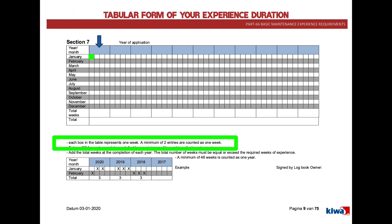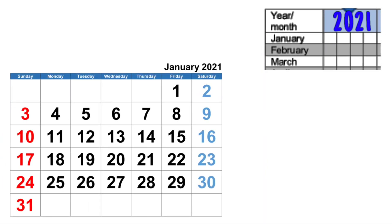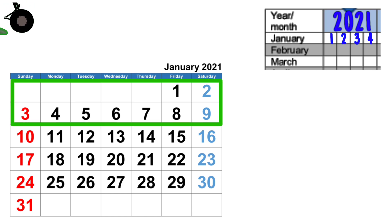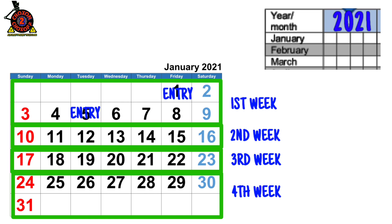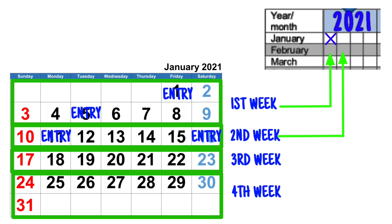Each box in the table represents one week, and a minimum of two entries are counted as one week. For example, take January 2021 — not all months have exactly four weeks, but since four boxes are given, we can combine partial weeks. The first nine days form the first week, then the second, third, and fourth weeks. If you get two entries in the first week, check the first box; two entries in the second week, mark X on the second box.